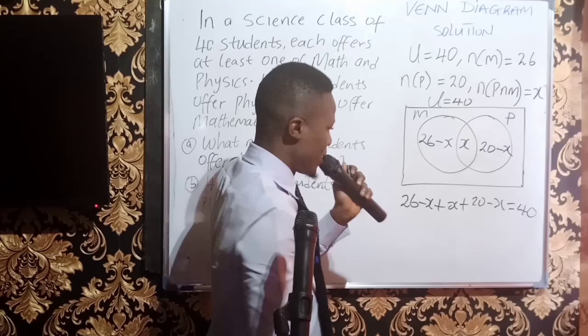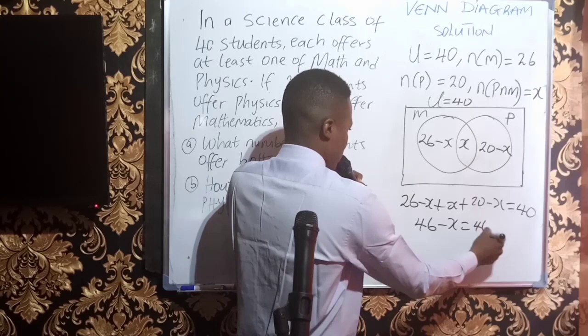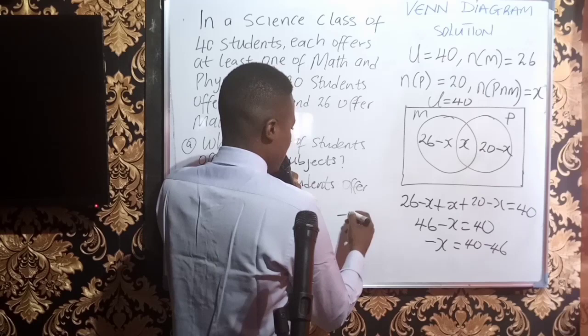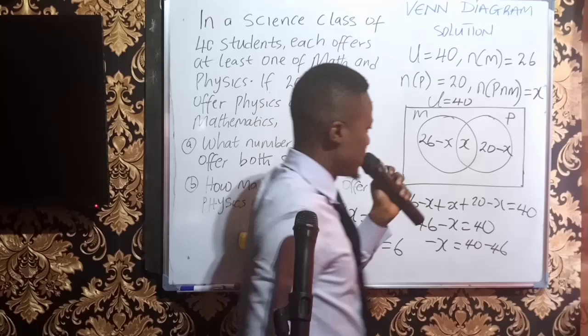Solving: 26 plus 20 gives 46. Minus X plus X is 0, leaving minus X equals 40. So minus X equals 40 minus 46, which is minus 6. The negatives cancel, giving X equals 6. Hence, 6 students offer both subjects.